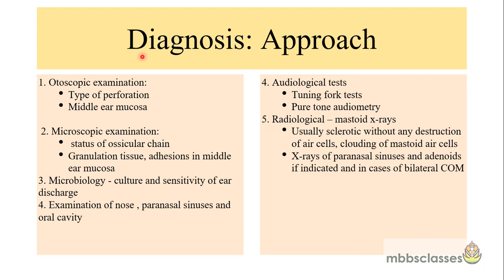When approaching a case of chronic otitis media, first and most important is history. After history taking, we do otoscopic examination, which tells us about the type, location, margins and size of the perforation and the middle ear mucosa. Next, microscopic examination must be done in all cases — it gives additional information about the status of the ossicular chain, presence of tympanosclerotic foci, ossicular chain disruption, granulation tissues, mucosal polyps or adhesions.